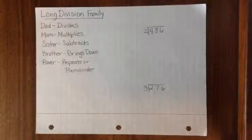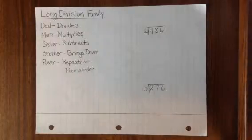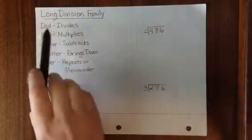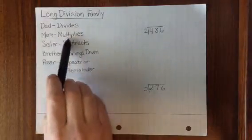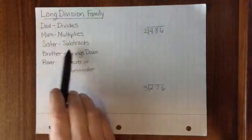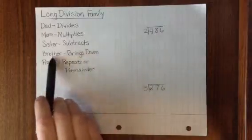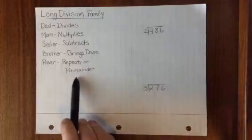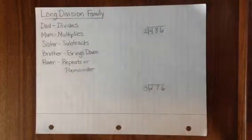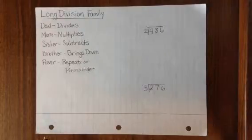Let's review the steps to long division using our long division family. Dad divides, then Mom multiplies, Sister subtracts, Brother brings down, Rover repeats or puts the remainder in the answer. If we look at a few problems, let's use our long division family to help us solve them.